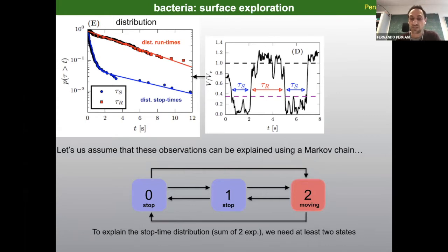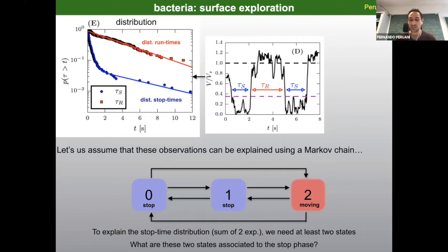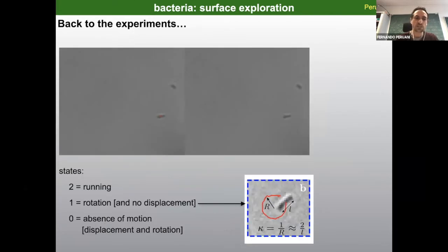So what can we do? There is a possibility, still using a Markov chain formalism, to assume not a two-state but a three-state model. Two of these states will be associated with the stop phase and one with the moving regime. A fair question is: what are these states associated with the stop phase? In order to clarify that, we went back to the experiments and started to look at what happens when the bacterium was in what we initially called the stop regime — and often it was not what we were expecting.